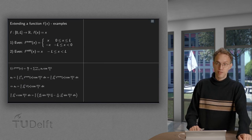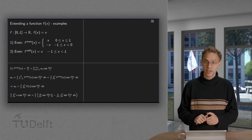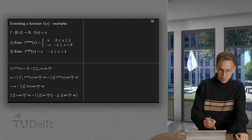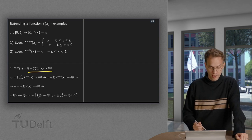First for the even one. The even one has only a_n, because it is an even function, so the Fourier series looks like this. We know how to compute the a_n.